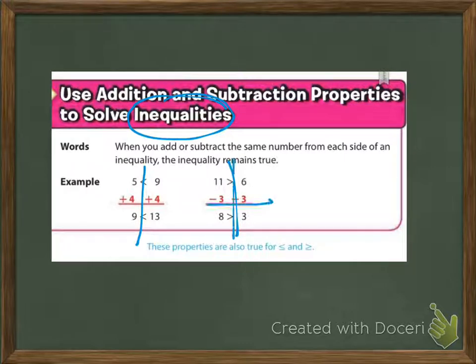We're still doing our t-charts — what we do to one side, we do to the other. If we're adding four to each side, the statement is still true: 9 is less than 13. If we subtract three from both sides on this other one, the statement still remains true: 8 is greater than 3.